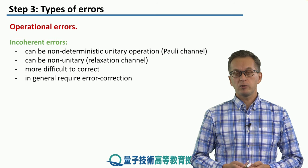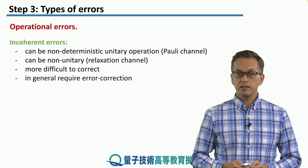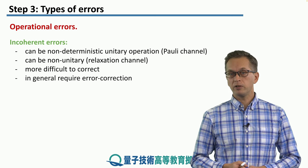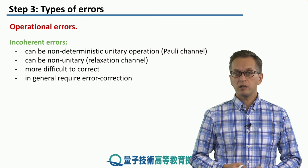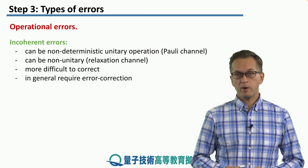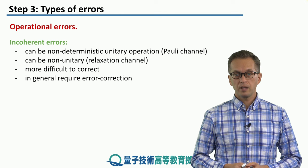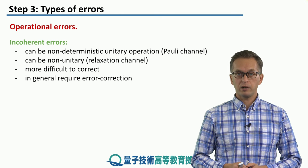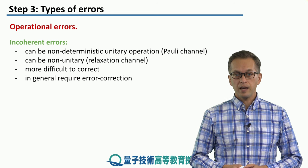Other types of operational errors are incoherent errors. These can be non-deterministic unitary operations, as we will see on an example of Pauli channels, or they can be non-unitary and also non-Pauli channels, such as the relaxation channel. These are a lot more difficult to correct, and in general they require error correction.